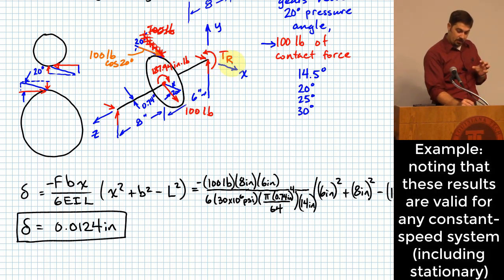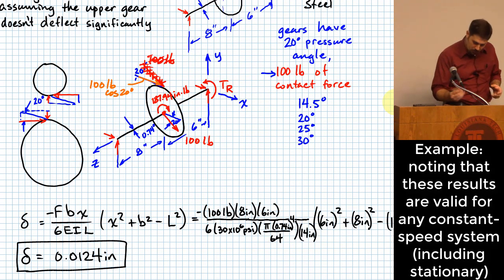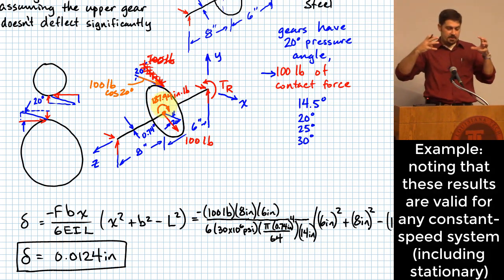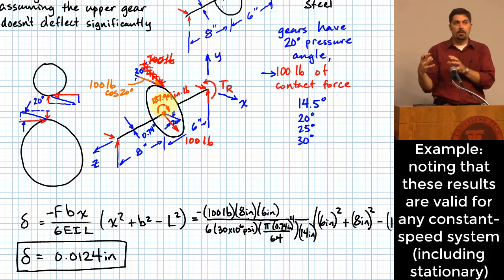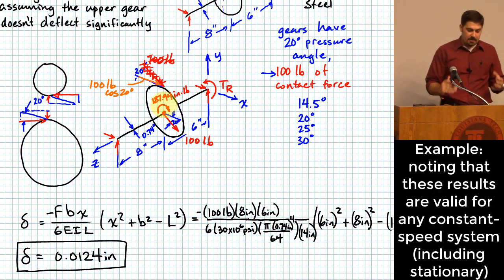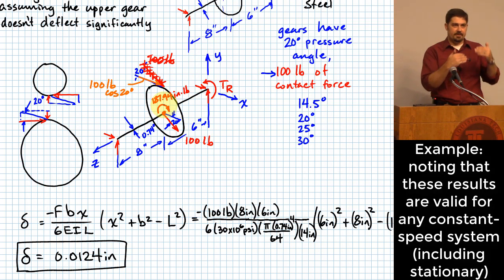The gear can be turning, and that's okay. In steady state - when it is not accelerating or decelerating - as long as we have the correct amount of resistive torque applied (the 187.94 inch-pounds), the system is not going to accelerate. Once you know it's not accelerating, you can look at this steady-state deflection that's going to happen.